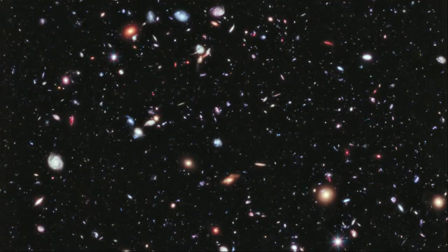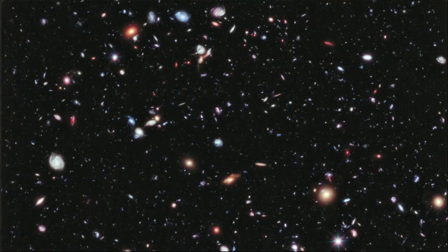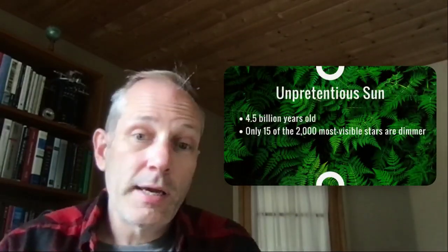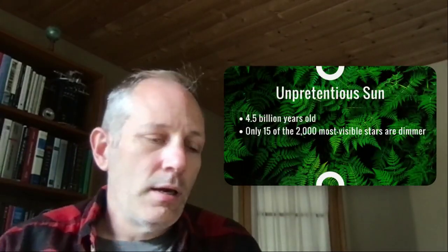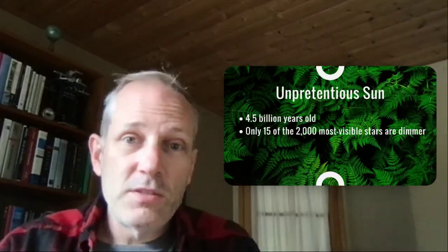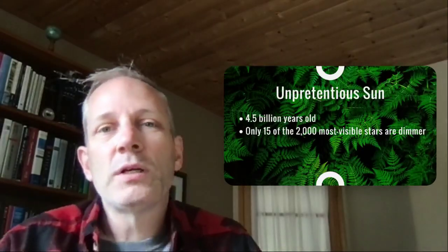Basically everything in this image is a galaxy, except for one star along the lower right of the bottom edge. So we have all these galaxies, and our sun is just one star in our galaxy. Our sun and solar system is about a third of the age of the universe — four and a half billion years old.